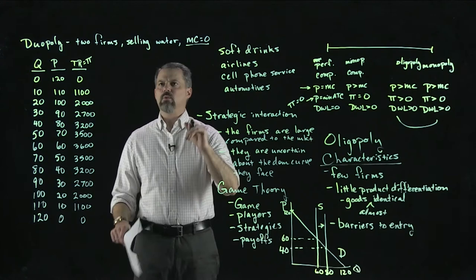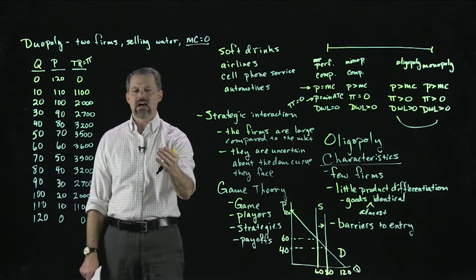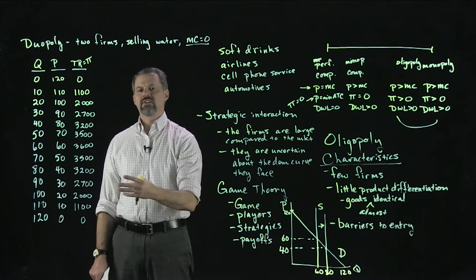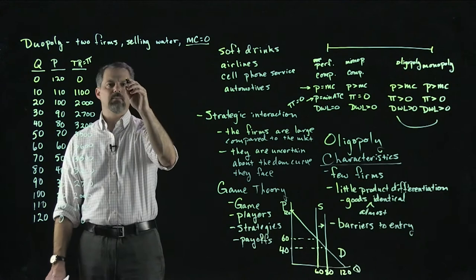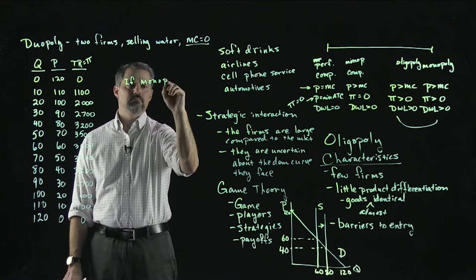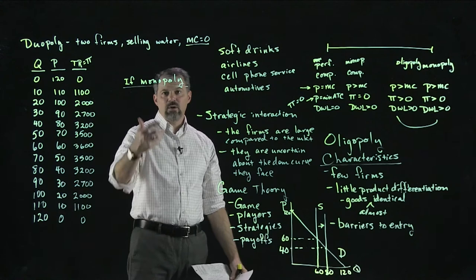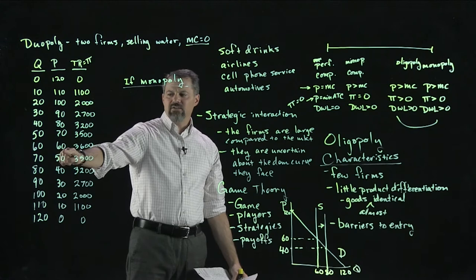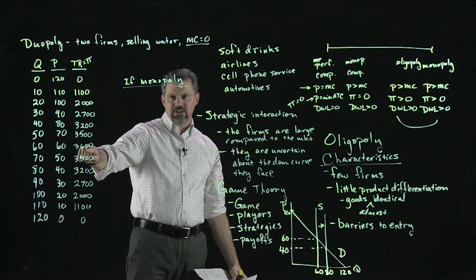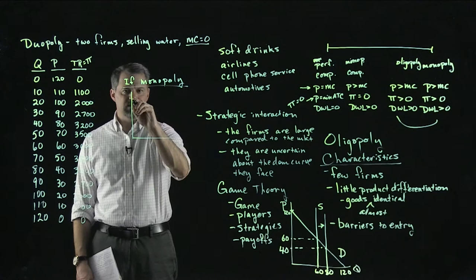Now let's think about a couple of extremes to understand the likely outcome for these two firms. Let's start with the monopoly outcome. If it's a monopoly, there's no uncertainty — we know the demand curve and maximize profit by producing 60 units. Price ends up at 60 and we earn $3,600. We can verify this by finding where marginal revenue equals marginal cost. The MR curve has the same intercept as demand and twice the slope, hitting the horizontal axis at 60. With MC equal to zero, MR = MC at a quantity of 60, yielding a price of 60 and profit of $3,600.